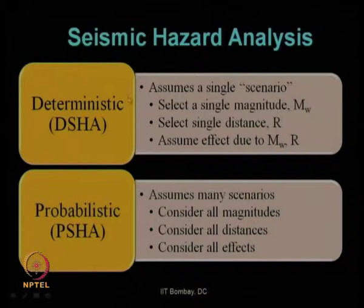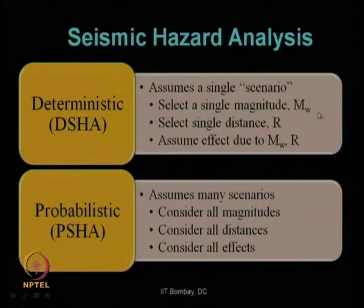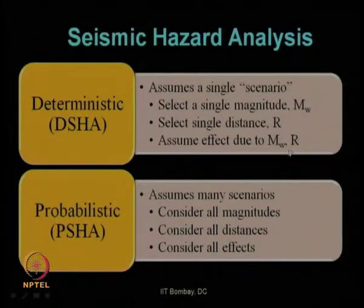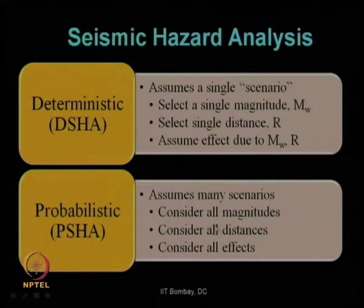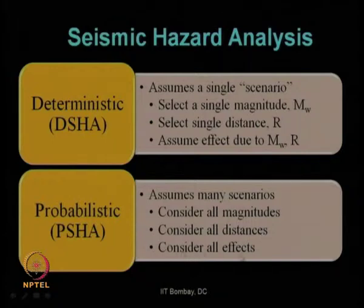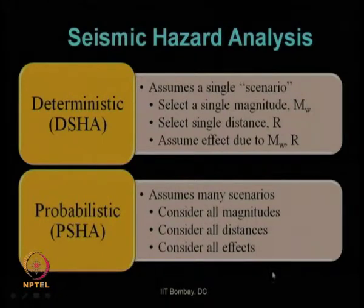In deterministic seismic hazard analysis, we consider only a single magnitude M-max and a single distance R-min, and we assume the effect of M-max and R-min to estimate the DSHA. Whereas in probabilistic seismic hazard analysis, we consider all the magnitudes involved, all the distances involved, and all the effects involved — that is, the probability or uncertainty involved in the event is completely taken care of.